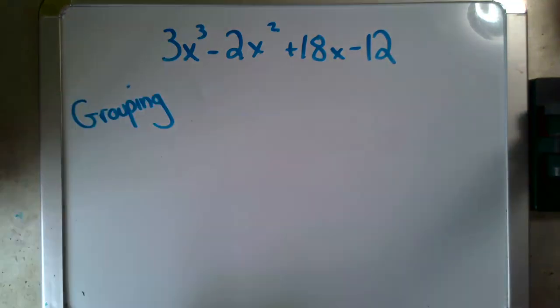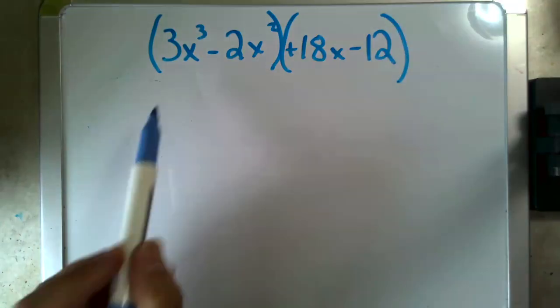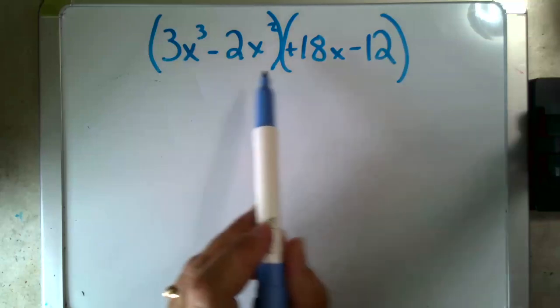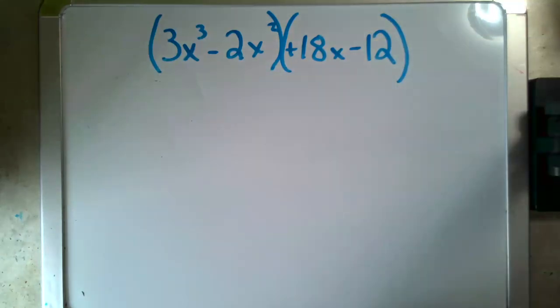And if you've never done this before, check out these videos, which break it down a little more, but we're going to continue at a faster pace. Grouping starts by grouping into the first 2 terms and the last 2 terms. And then for each of these, we're going to do the same thing we did in the other problem. We're going to find the greatest common factor of each grouping and pull it out.